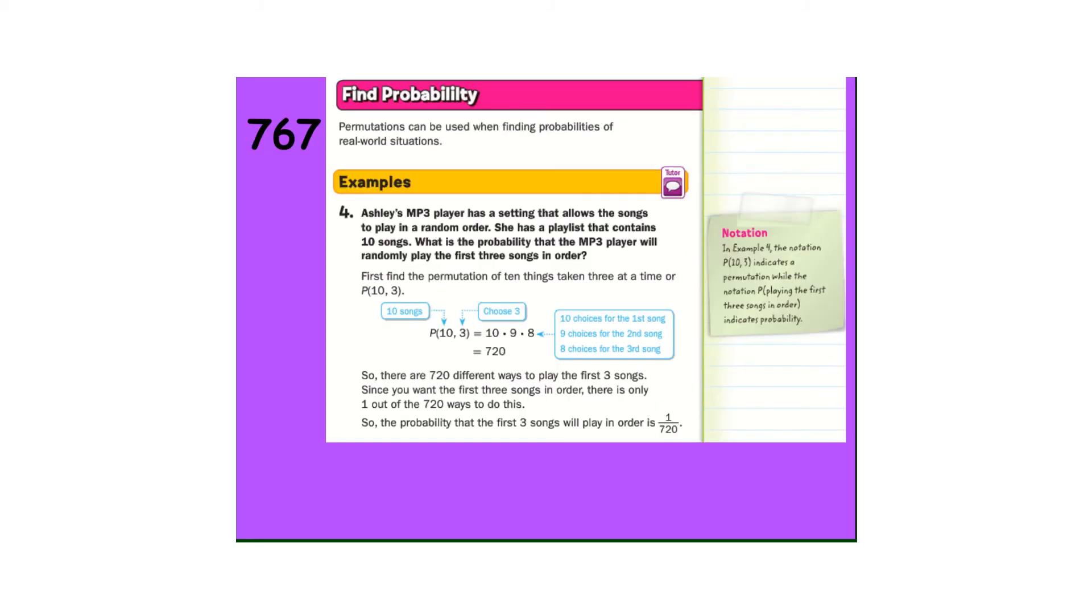Number four. Ashley's MP3 player has a setting that allows songs to play in random order. She has a playlist that contains 10 songs. What's the probability that she's going to play the first three songs in order? So that's permutation 10, three. So 10 times nine times eight. 720. So what's the probability? One out of 720.